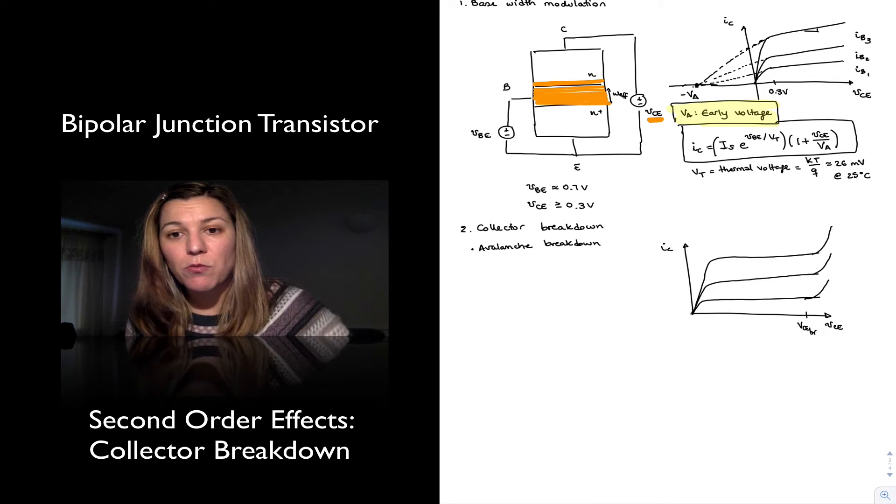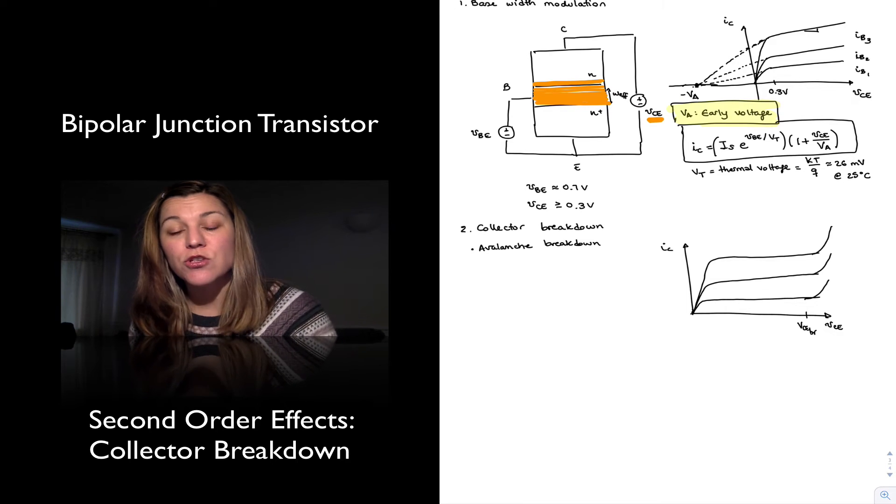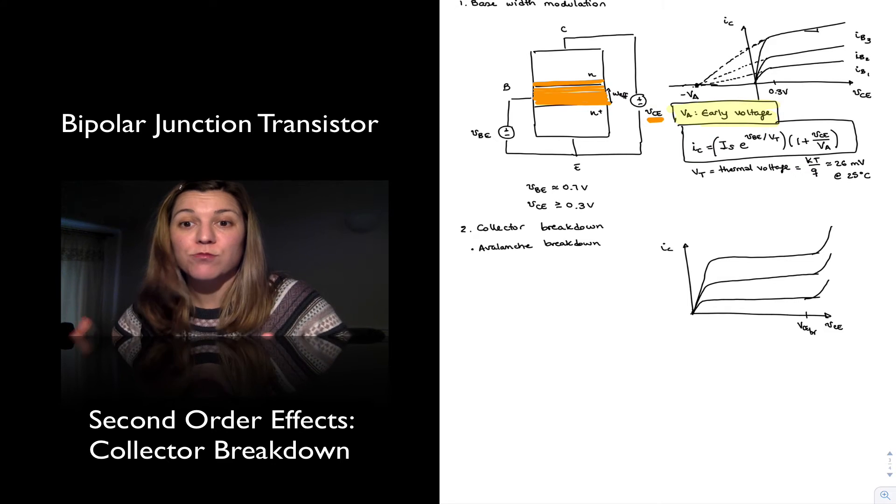And so as they move towards the collector, they collide with other electrons that are trapped. They break covalent bonds because they have enough energy to do that, and so they free up additional electrons.